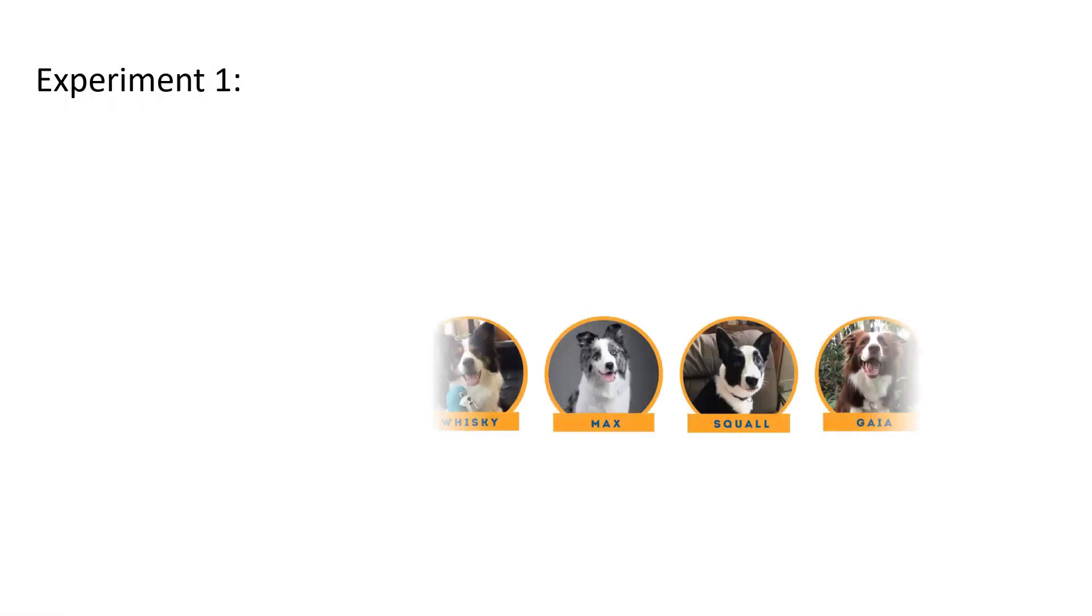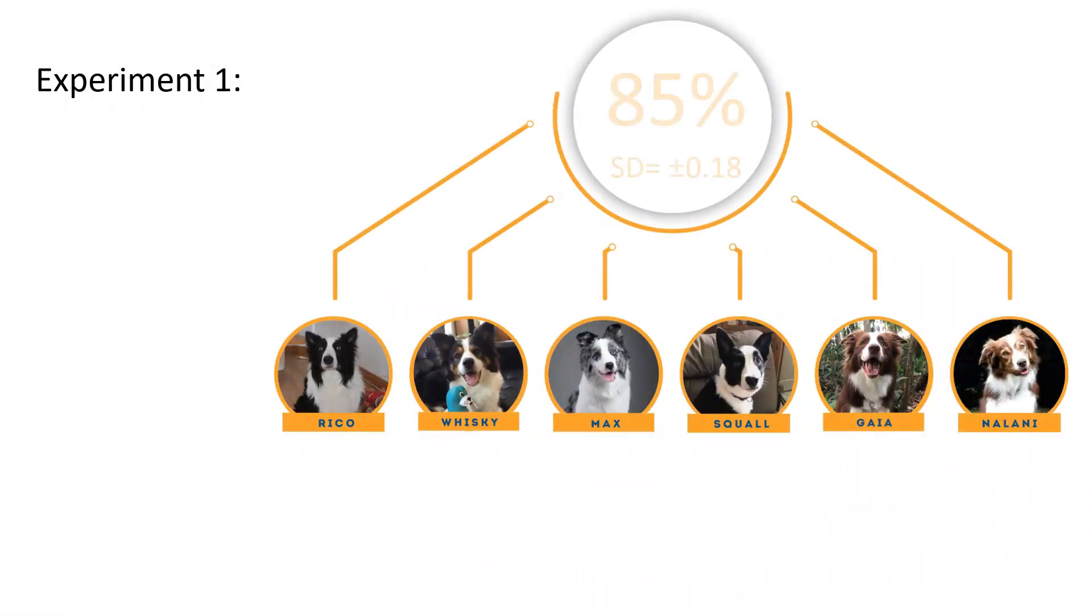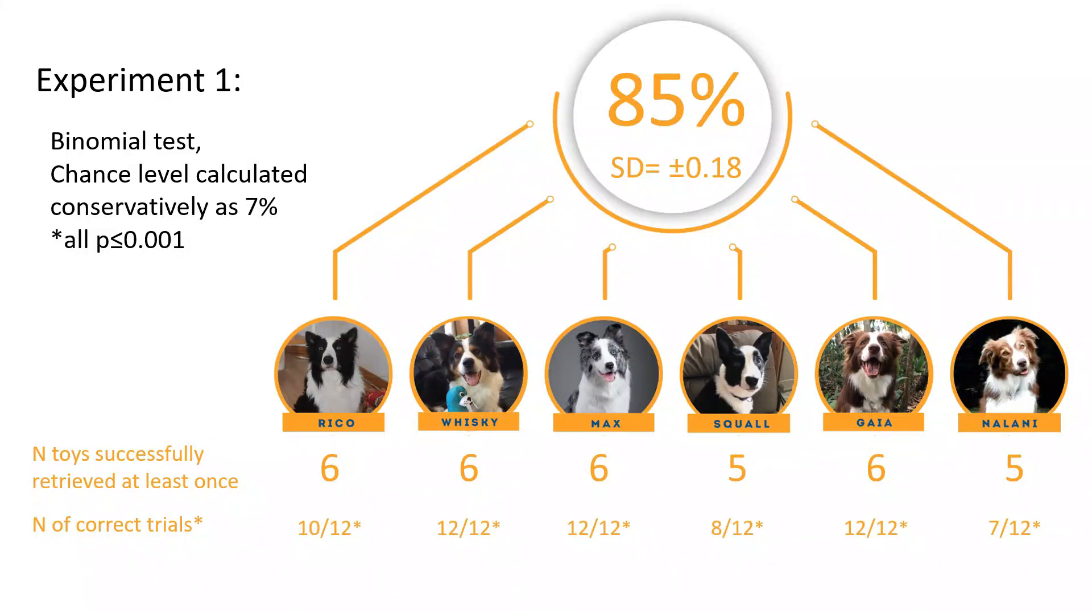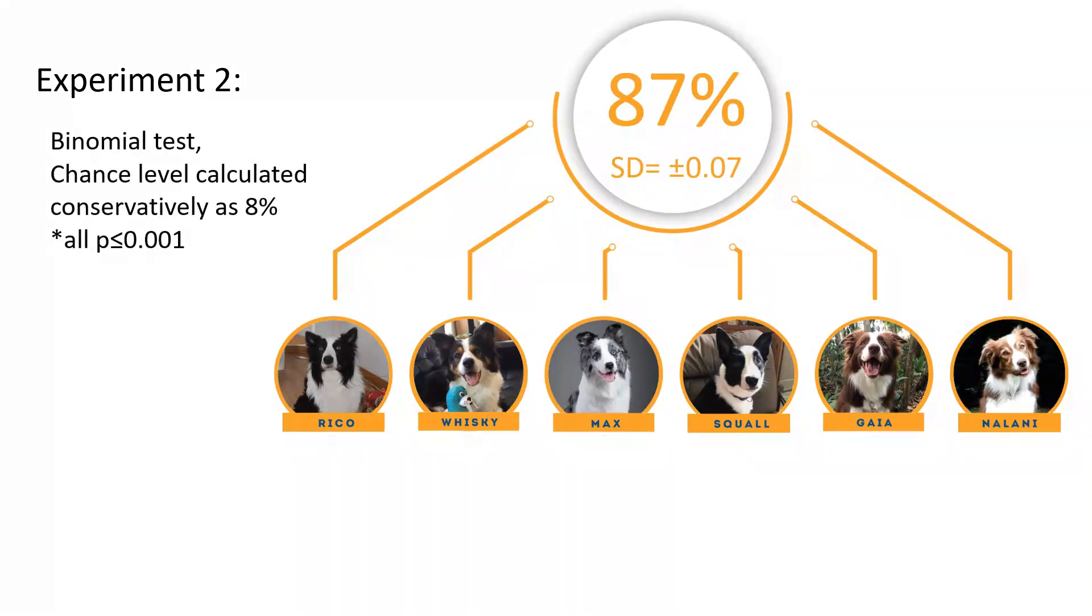In experiment 1, the dogs retrieved the correct toy in 85% of the trials, showing that they have successfully learned the names of between 5 to 6 toys. In experiment 2, the dogs retrieved the correct toy in 87% of the trials, proving that they have learned the names of between 11 to 12 new toys.